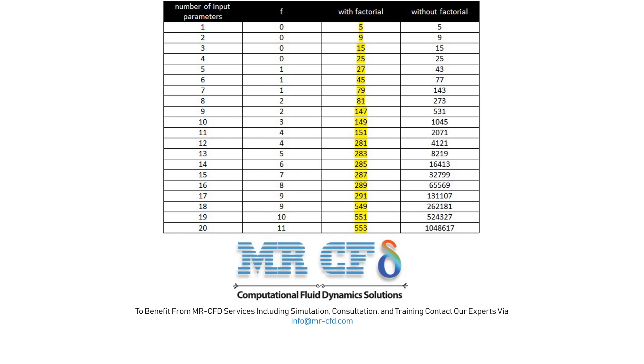Of course, the ANSYS Workbench software also uses the case that has the limiting factor f to determine the number of design points. Therefore, according to the formula, two factor models have nine divided states, three factors have 15 states, four factors have 25 states, and so on.